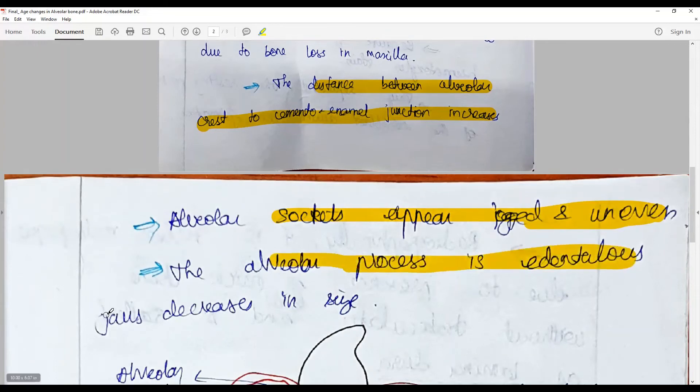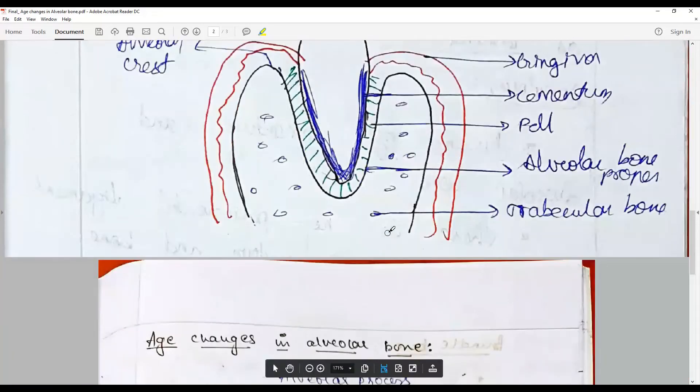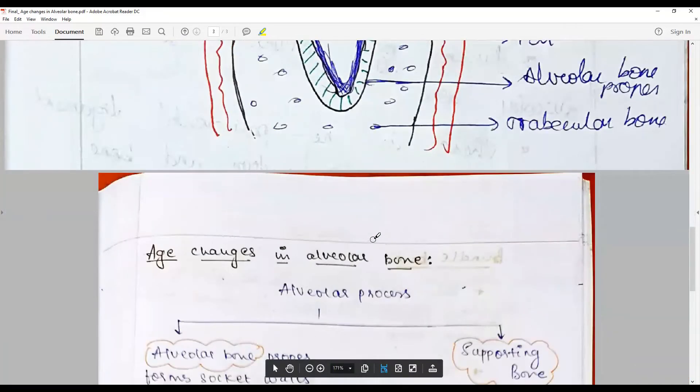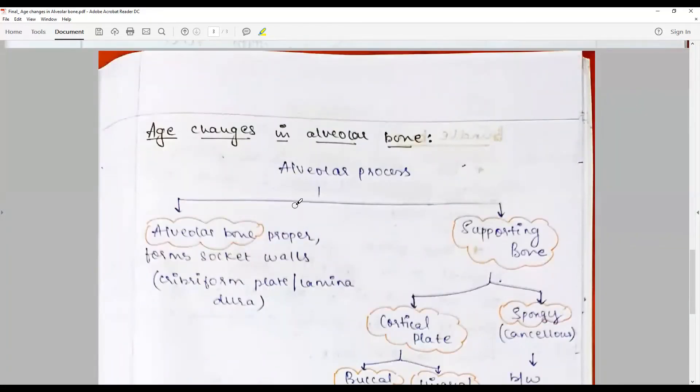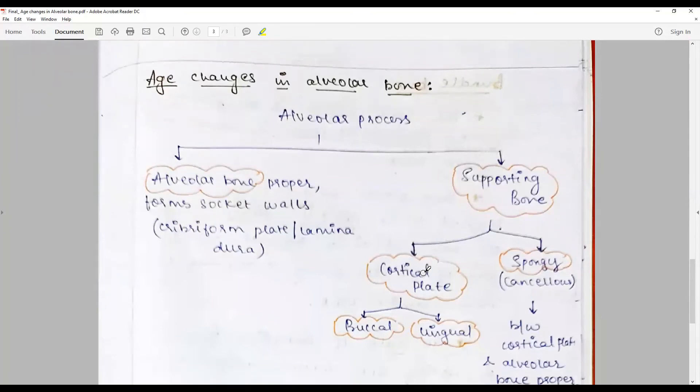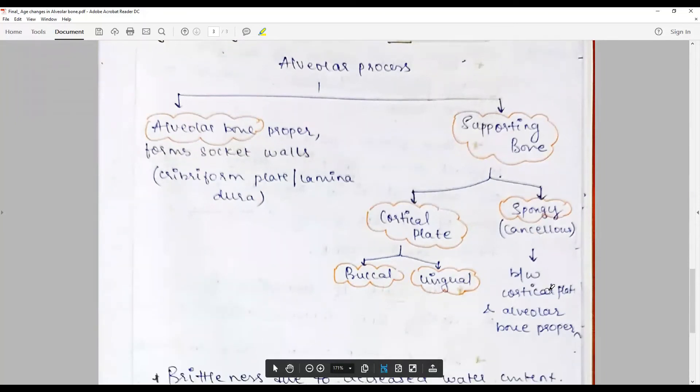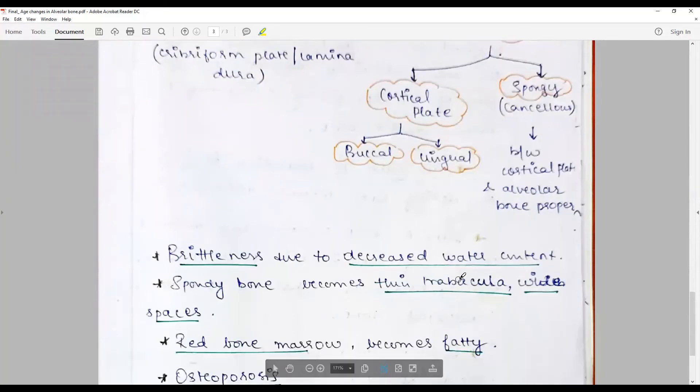So let's see how another candidate has given answer for the same exam. He or she has divided the alveolar process into alveolar bone proper and supporting bone. Alveolar bone consists of forms of the socket wall forming the cribriform plate or lamina and the radiological lamina dura, while the supporting bone is made up of the cortical plate which is buccal or lingual, thick spongy and cancellous between the cortical plates and alveolar bone proper.